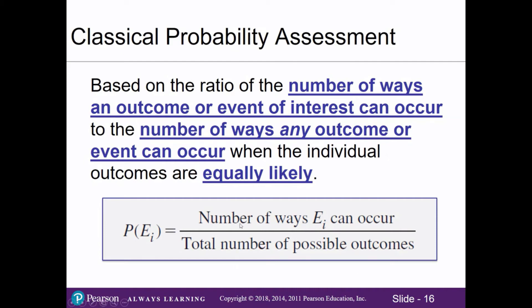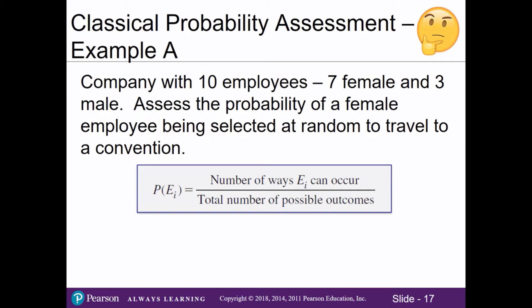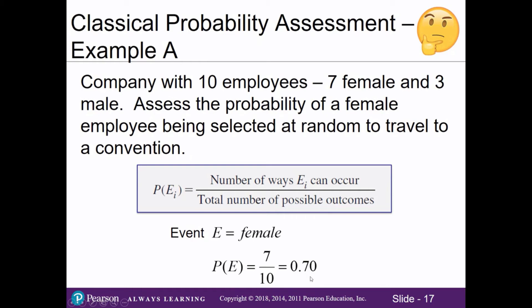To calculate classical probability, find the number of ways your event of interest can occur and divide by the total number of possible outcomes. For example, Company A has ten employees — seven female and three male. The probability of randomly selecting a female employee is 7 divided by 10, which equals 0.7. Remember, probabilities must always fall between 0 and 1; if you get a number greater than 1 or negative, you've made an error.